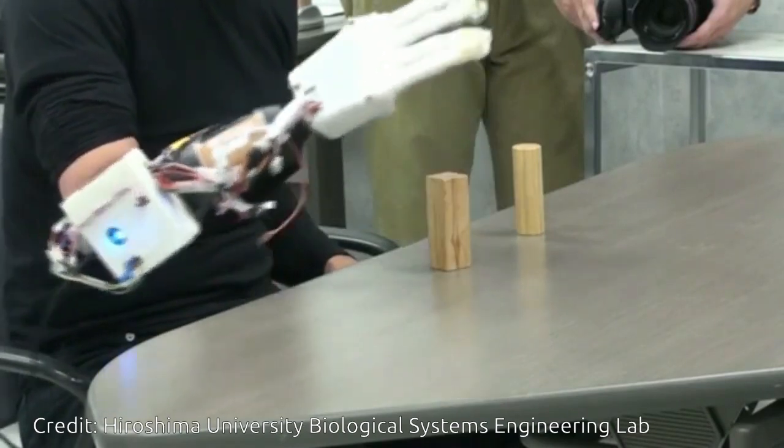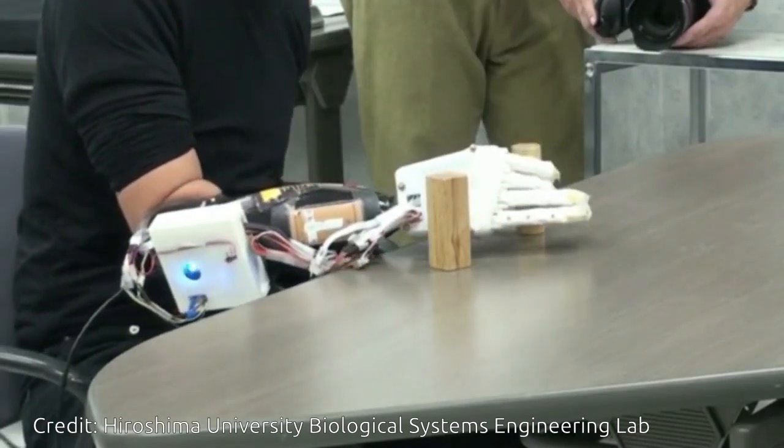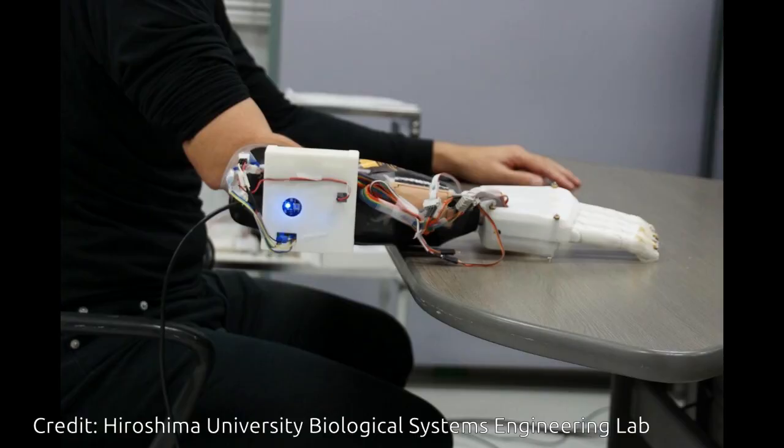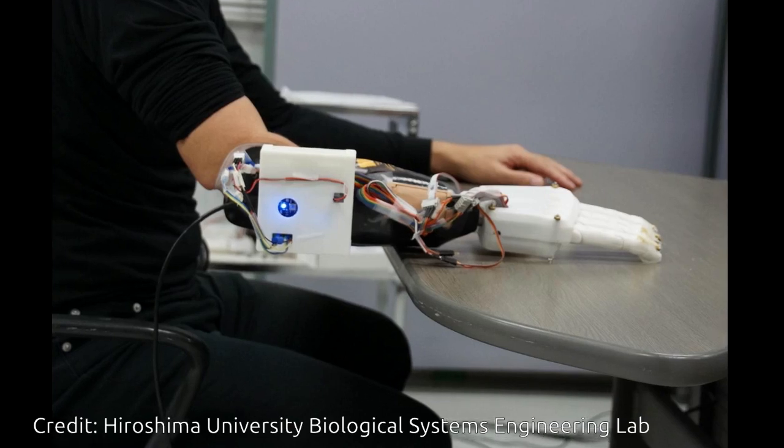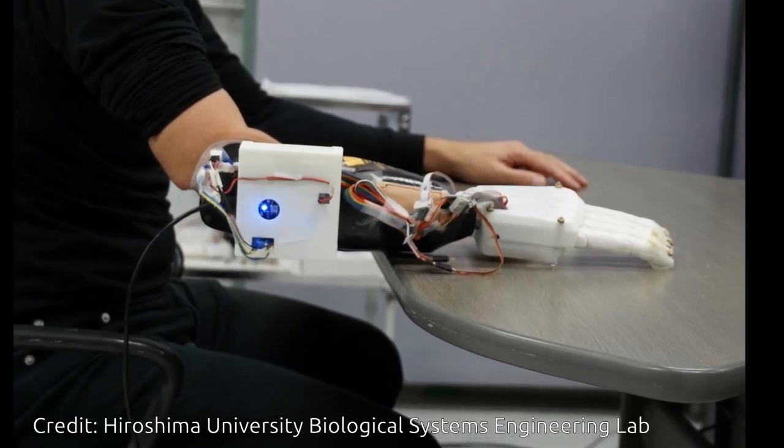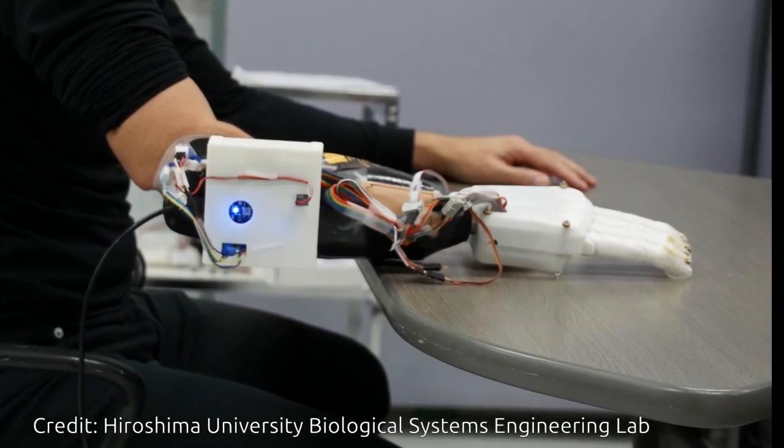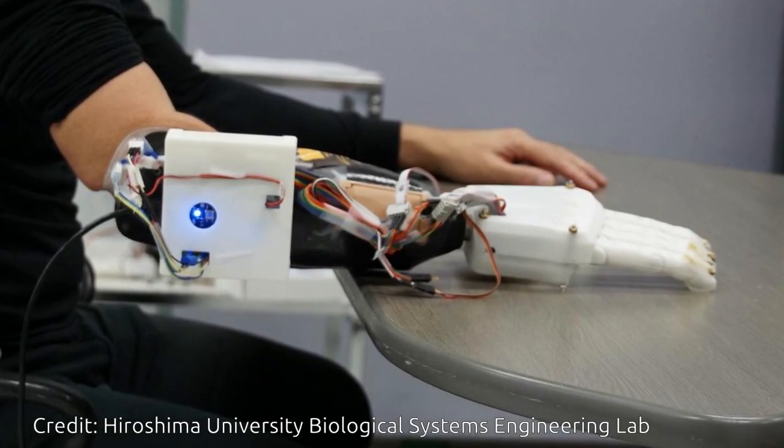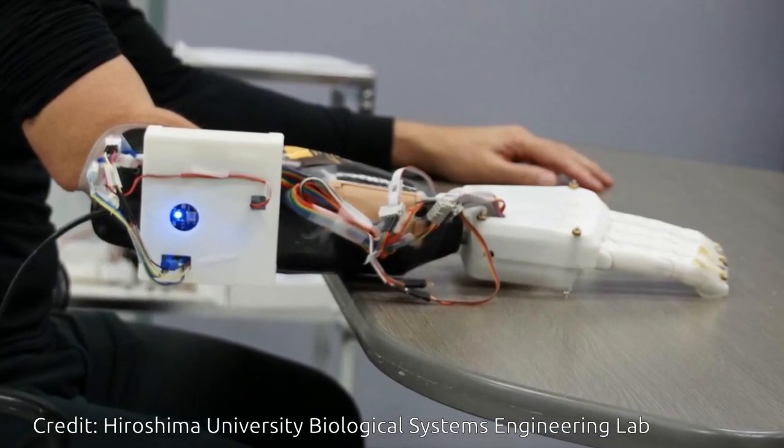Prosthetic limbs can be very useful, but are often expensive and difficult to use. The Biological Systems Engineering Lab at Hiroshima University has developed a new 3D-printed prosthetic hand combined with a computer interface, which is their cheapest, lightest model that is more reactive to motion intent than before.